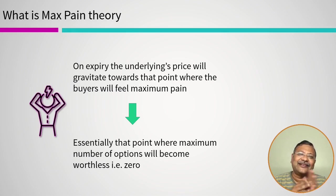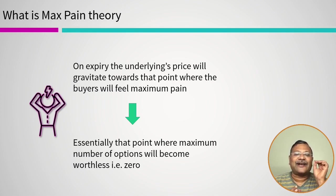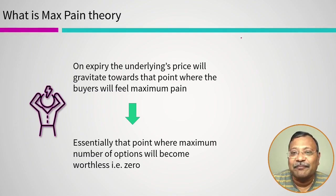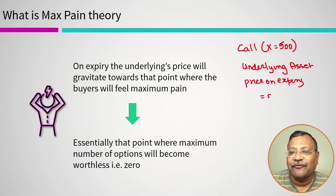Now why is this theory slightly controversial? A buyer very well knows that he will suffer the maximum loss if the option expires at the money or out of the money. Let us take an example of a call buyer who has purchased a call with a strike price of 500.